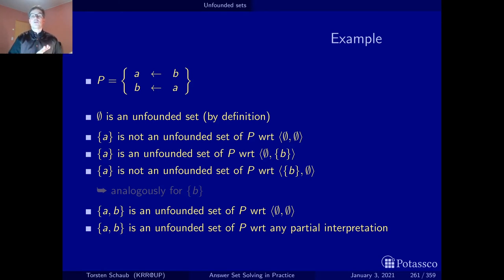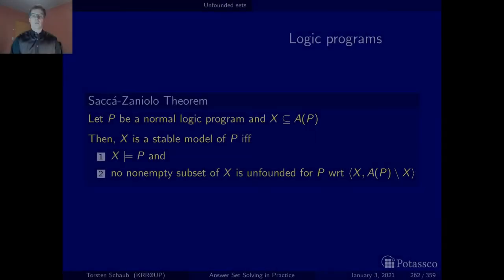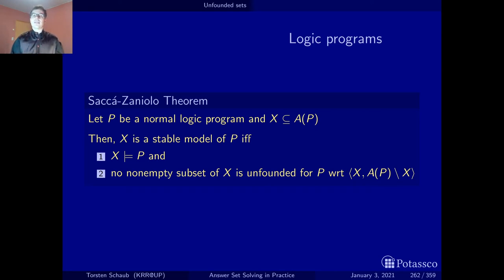We can characterize stable models using the concept of unfounded sets. A model is a stable model if and only if it does not contain any non-empty unfounded set, where the context is given by the total interpretation of the model. In other words, for a model to be a stable model, each subset must have an external support. The notion of external support is the key concept underlying all these characterizations, including loop formulas and unfounded sets.